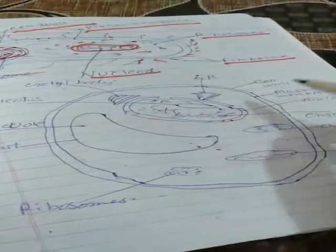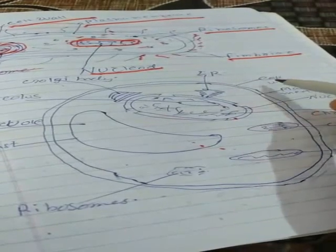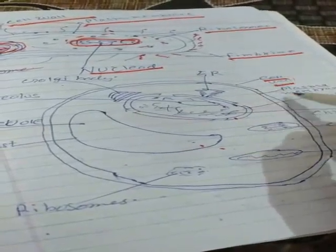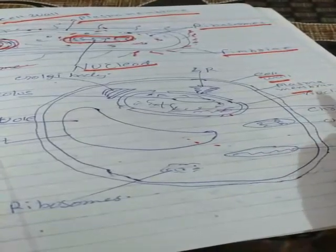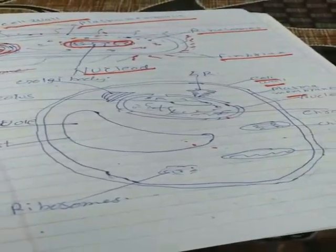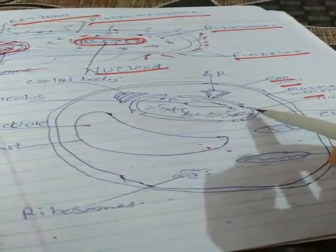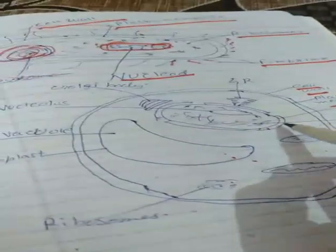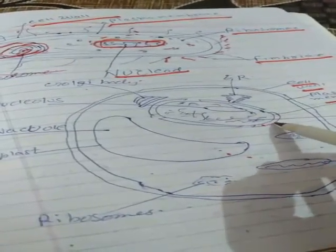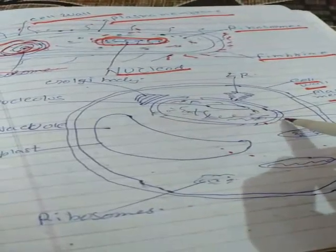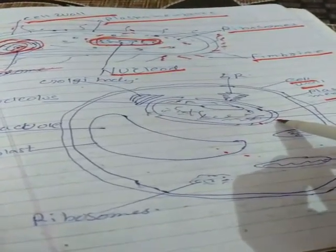You will see that there are also two membranes. The outer membrane is called the cell wall and the inner membrane is called the plasma membrane or cell membrane. The nucleus consists of an outer covering called the nuclear membrane.